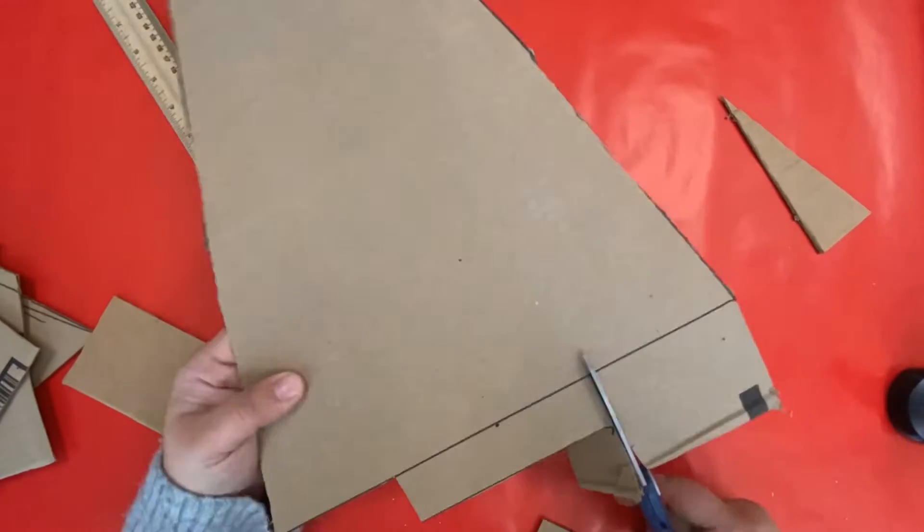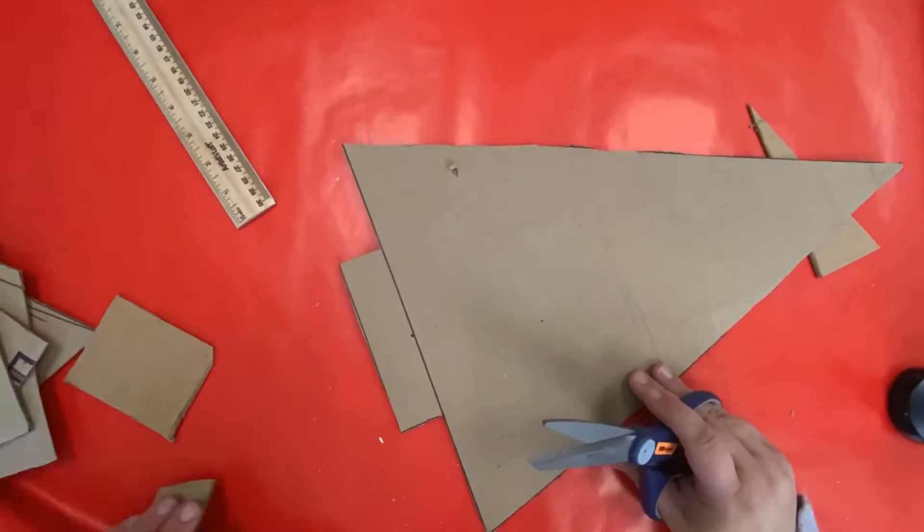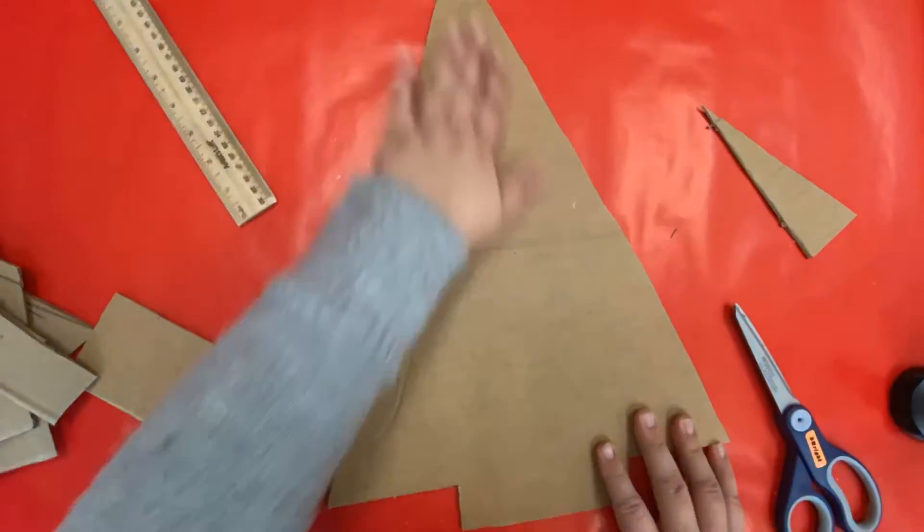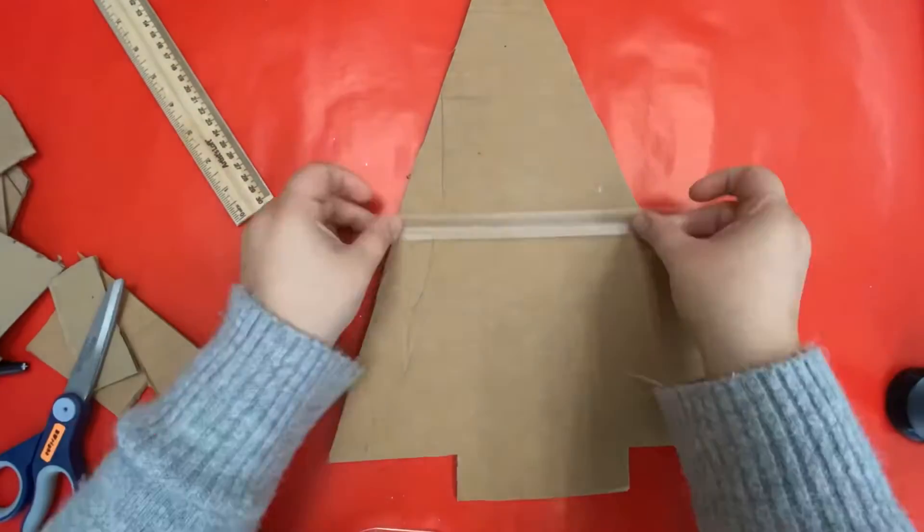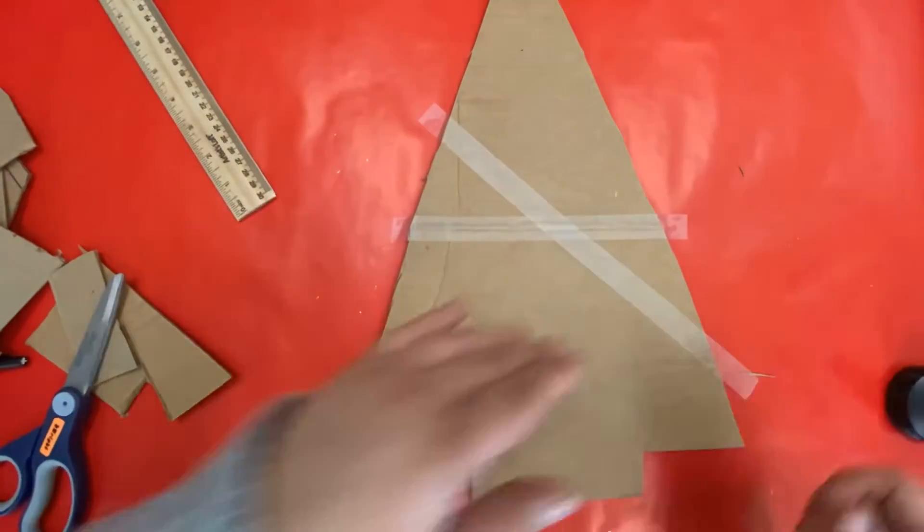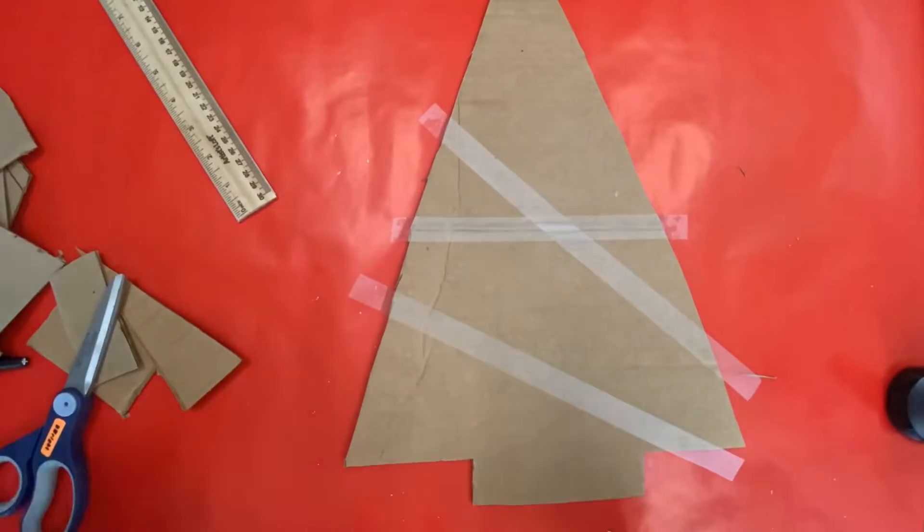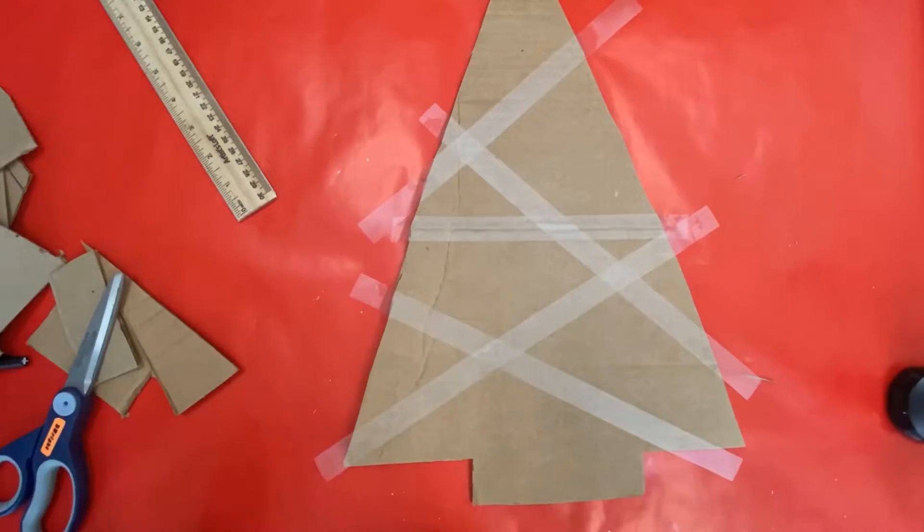Once you have your tree completely cut out, it's time to make the fun geometrical lines going through your tree. If you have younger kids, you probably will need to do this step too, but if you have older kids you can let them put the tape on the tree. I recommend just laying it on nice and smooth, as many or as few lines as you want.